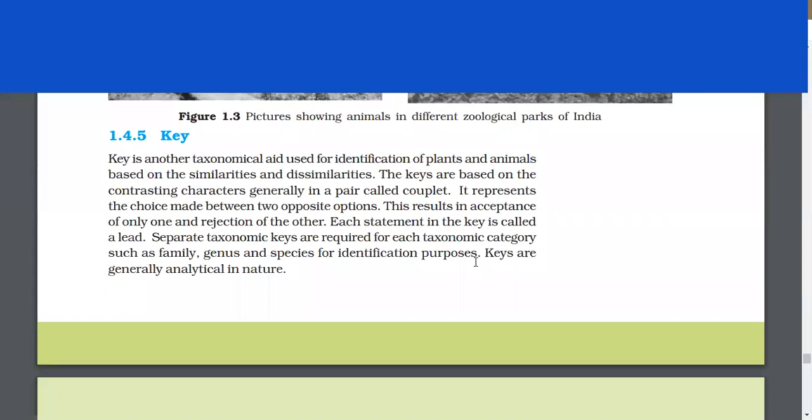Key. Key is another taxonomic aid used for identification of plants and animals based on the similarities and dissimilarities. The keys are based on the contrasting characters generally in a pair called couplet. It represents the choice made between two opposite options. This results in acceptance of only one and rejection of the other. Each statement in the key is called a lead. Separate taxonomic keys are required for each taxonomic category such as family, genus, and species for identification purposes. These are generally analytical in nature.